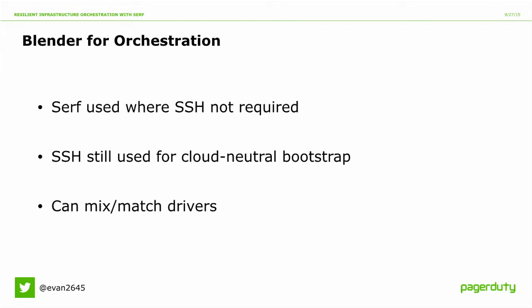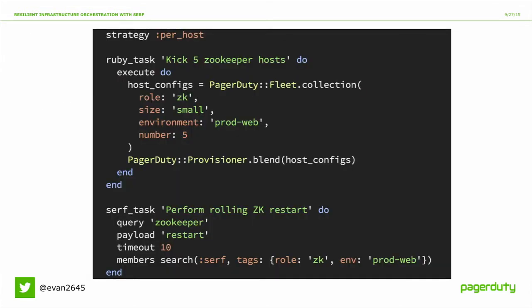One of the main Blender features is the ability to mix and match execution drivers. Here's an example: a small Blender script that first provisions five ZooKeeper hosts and then performs a rolling restart of that ZooKeeper cluster using SERF. The first task is executed using Ruby and the second task is executed using SERF.